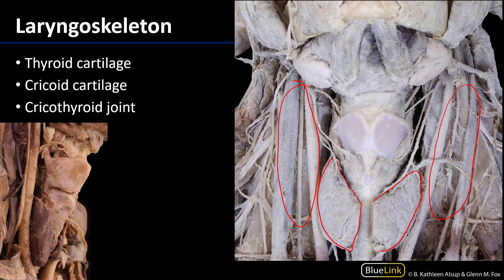And we can see most prominently here along the midline — that would be one lamina of the thyroid cartilage, and that would be the other lamina of the thyroid cartilage. And they come together here as the laryngeal prominence, also known as the Adam's apple.